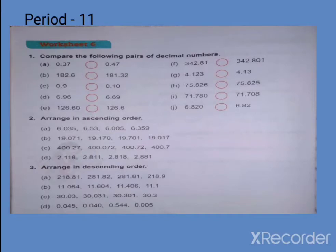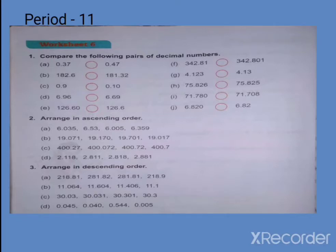यहाँ देखिए, comparison के लिए सबसे पहले आपने इसमें से देखना और बताना है which is greater। तो देखिए — 0.0 दोनों में same है, left side दोनों की first digit same है। उसके बाद इसमें 3 है, इसमें 4 है, तो 4 is greater, so 0.47 is greater। Next — 182.6 और 181 है, 182 is greater। यह तो easy था — like decimals में whole number से हमें पता चल गया which is greater।